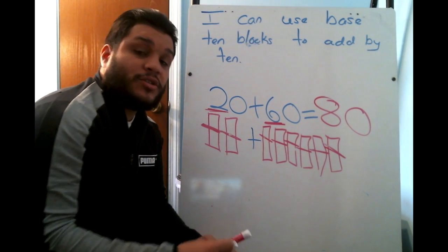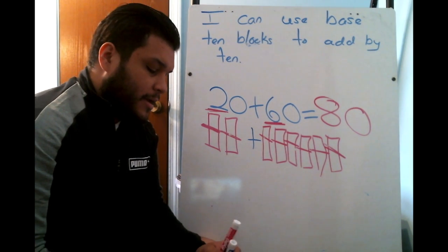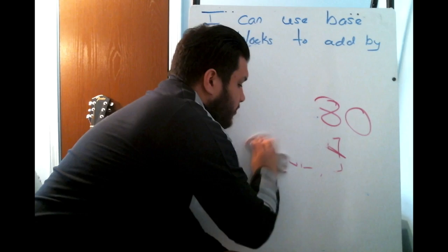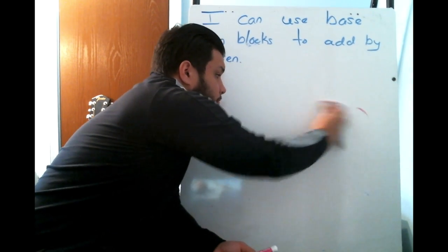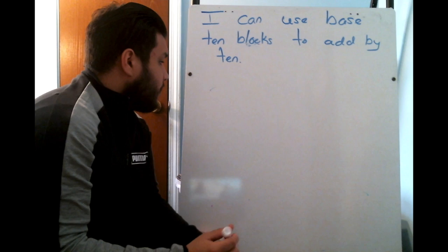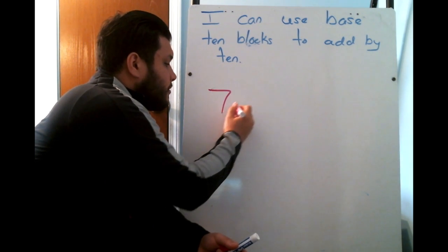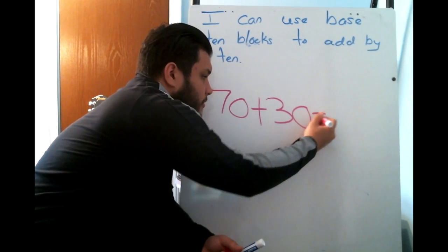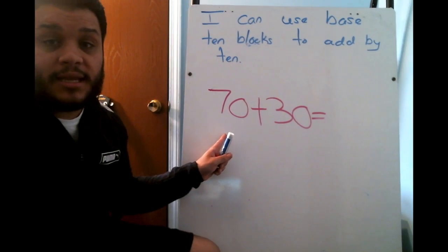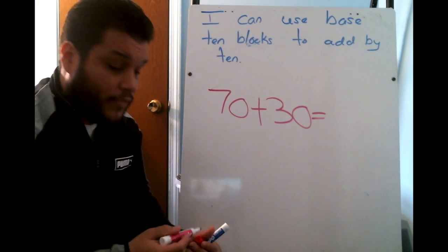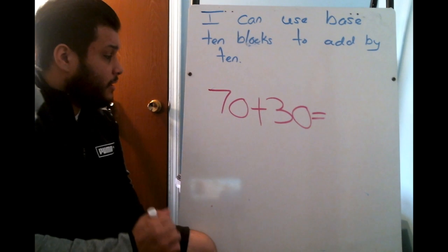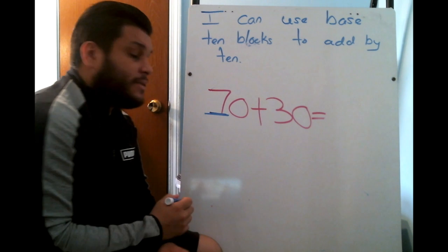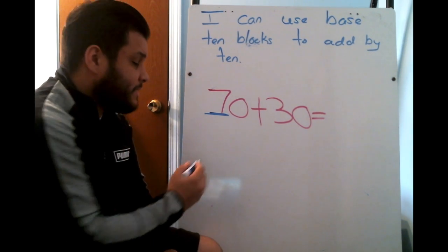Now, I'm going to do one more. I'm going to do one more because you guys are doing such a great job. I'm actually going to challenge you guys. So, let's see if we can do this. What if we had this? 70 plus 30. Well, my first step I know is that I'm going to look at the number 70, underline what number is in my 10s place. 7. So, that lets me know that I should have 7 base 10 blocks.